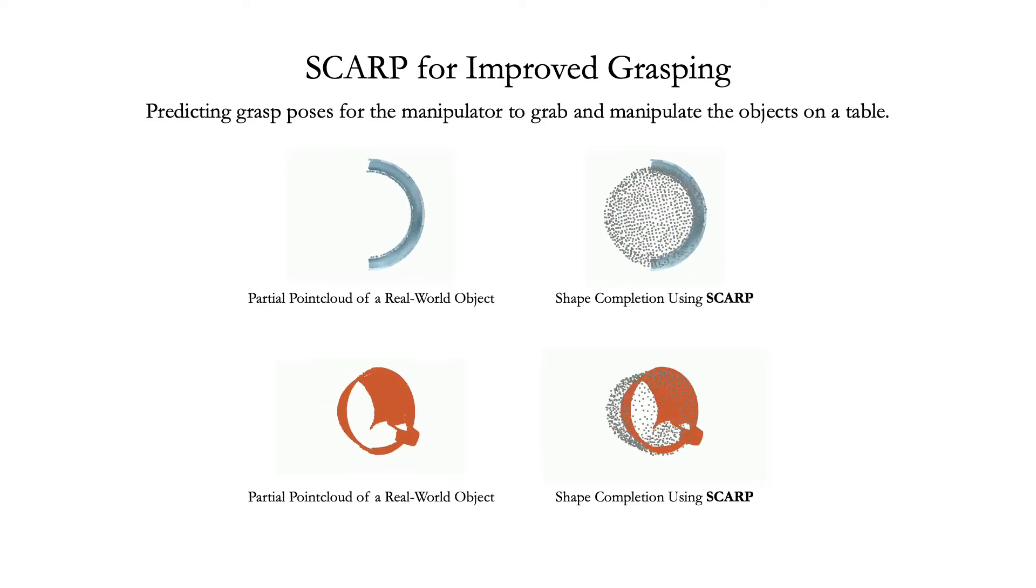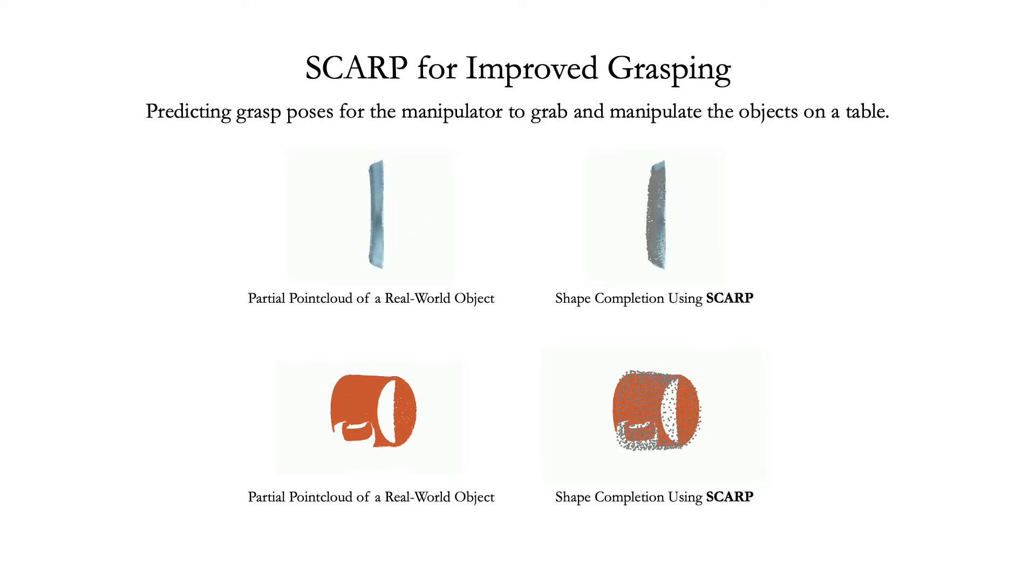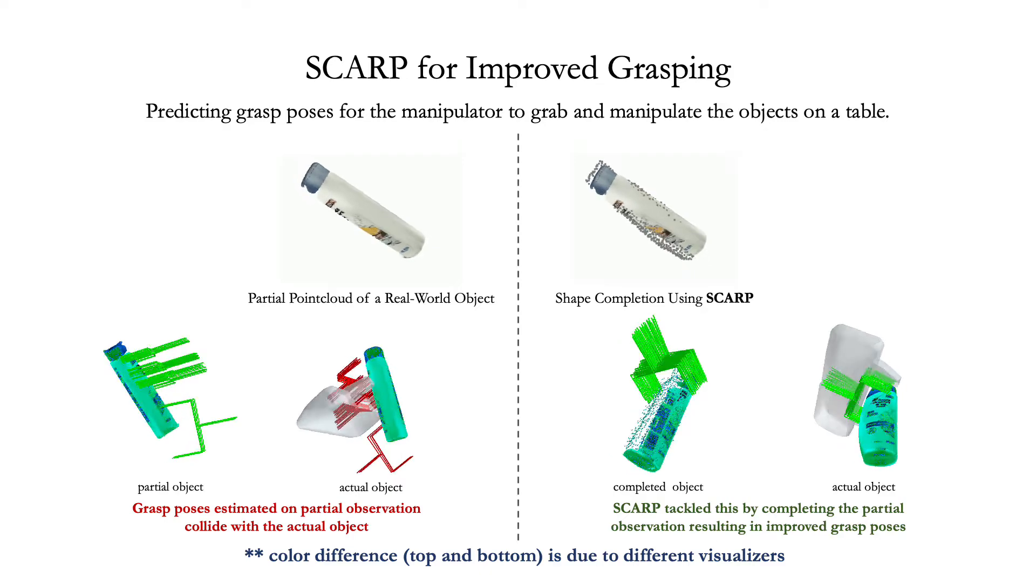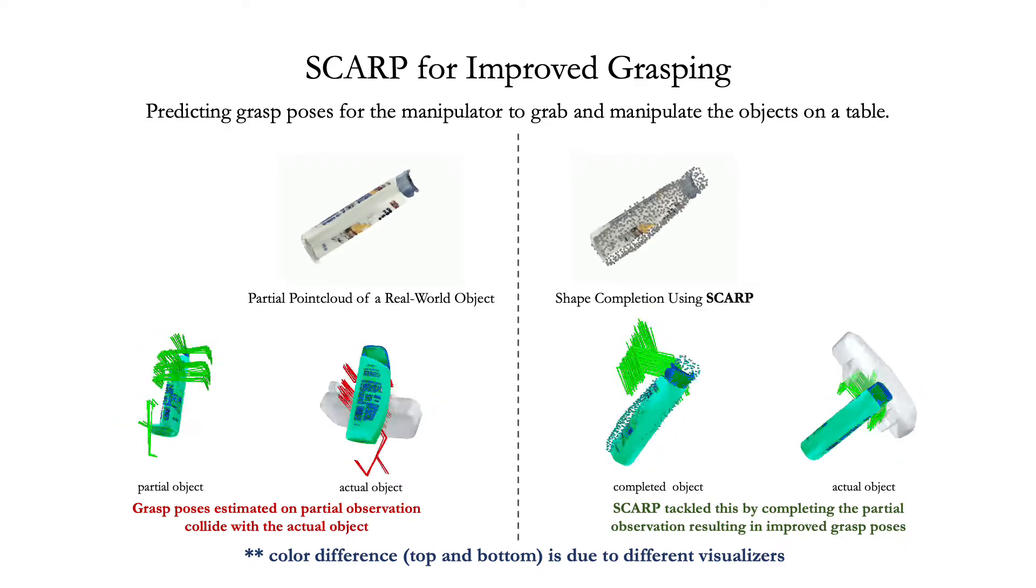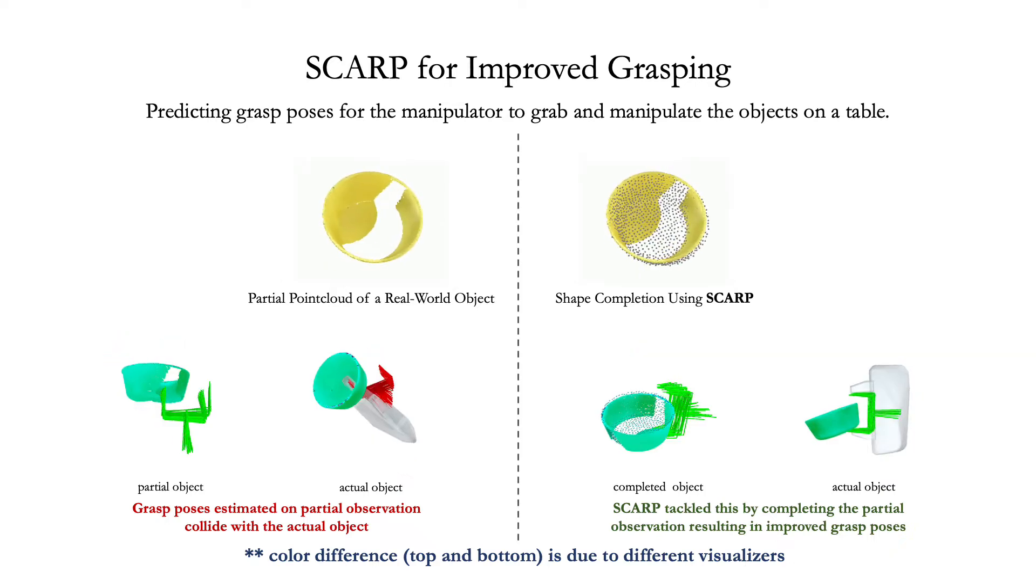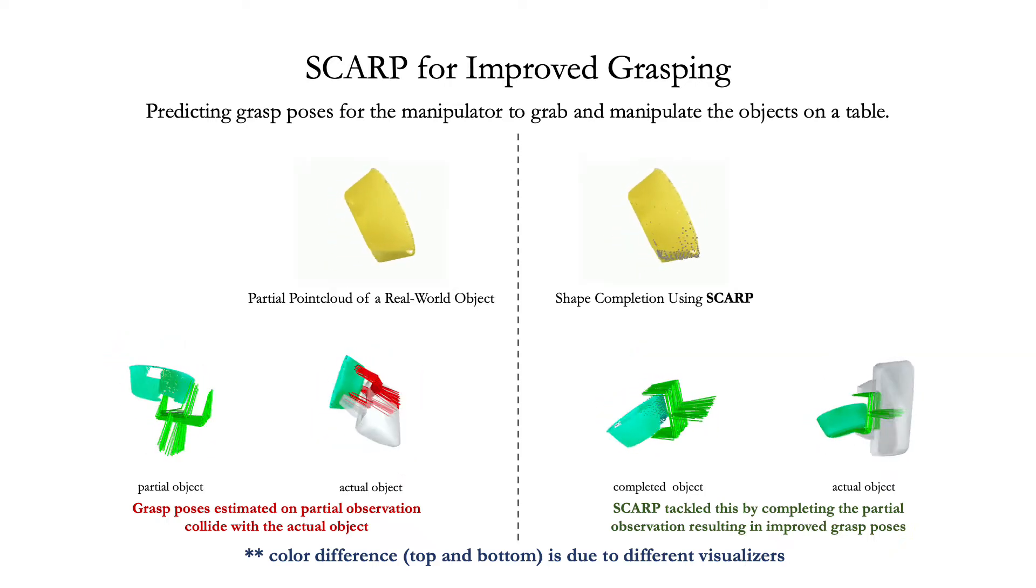We show additional results on real-world scans. As can be seen, SCARP does not need domain adaptation and can complete the objects based on its priors learned on synthetic datasets like ShapeNet.